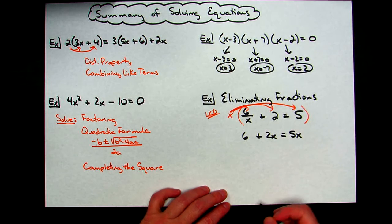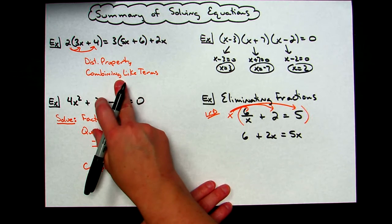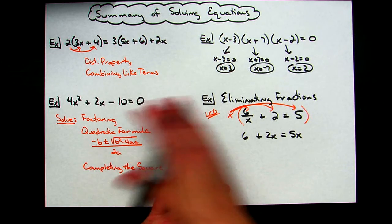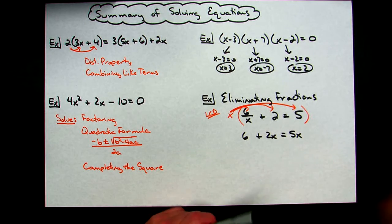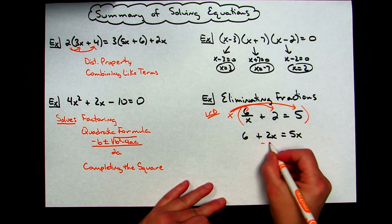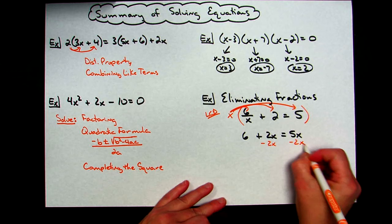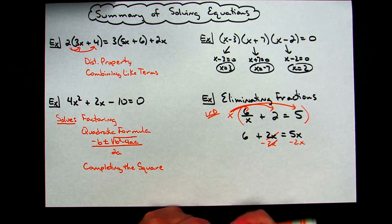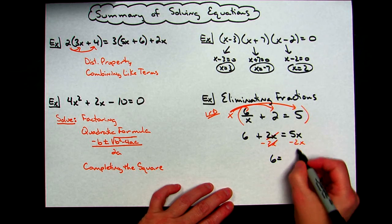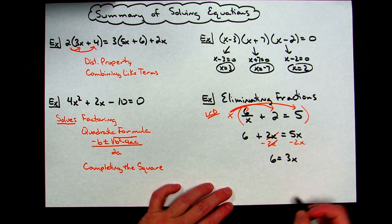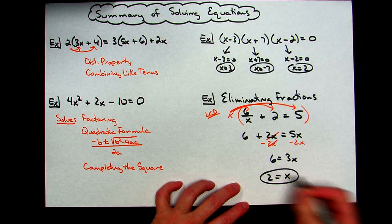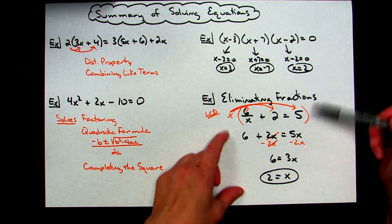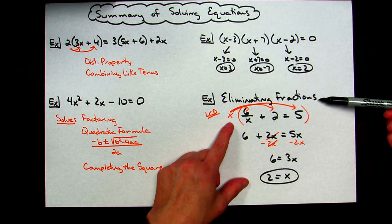Alright, from there, you could just go ahead, normal solving equations like we would have over here, combining like terms, depending on how complicated this is, you might see distributive property. I'll just go ahead and finish this one. Let's do a minus 2x from both sides of the equation. Alright, so that's going to give me a 6 equals 3x. I can divide both sides by 3. x equals 2. Alright, but putting this one in here so that you remember how to eliminate your fractions.